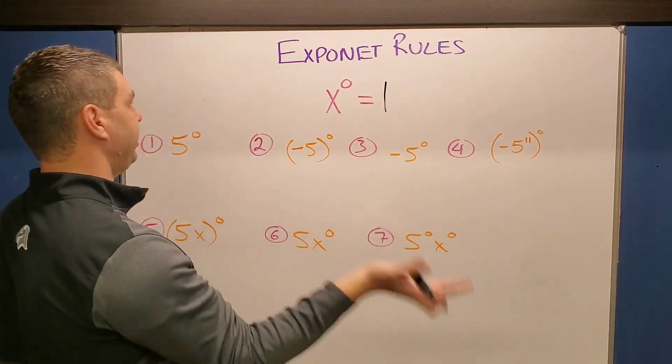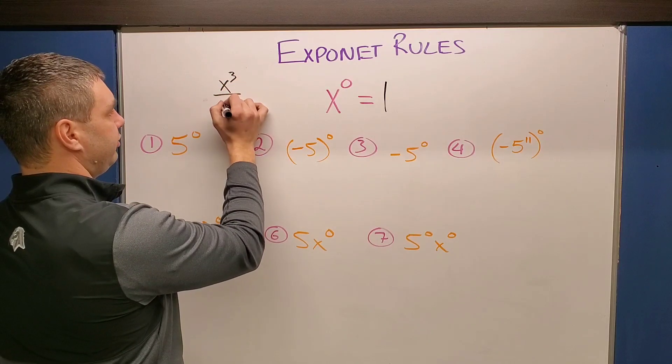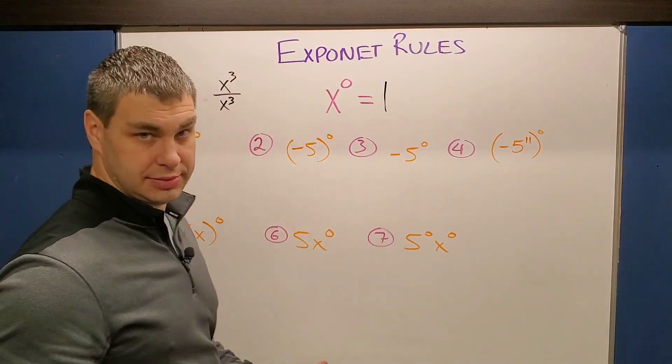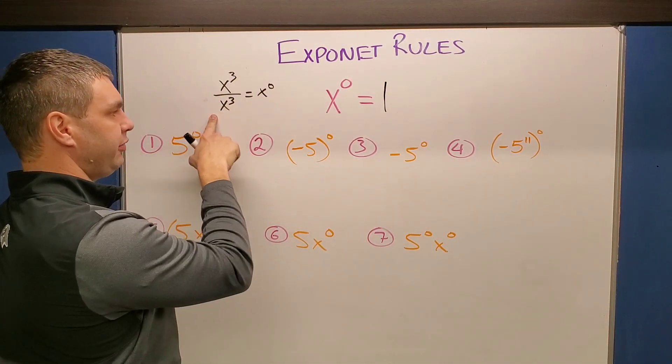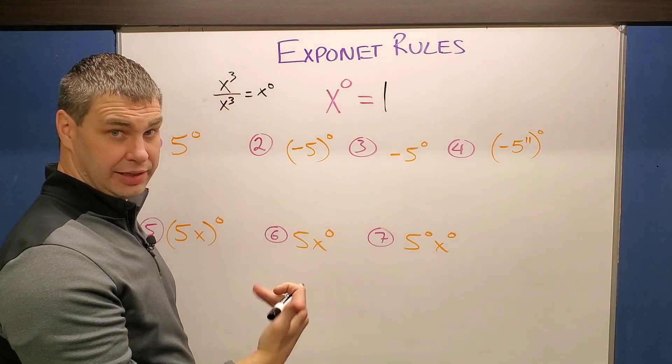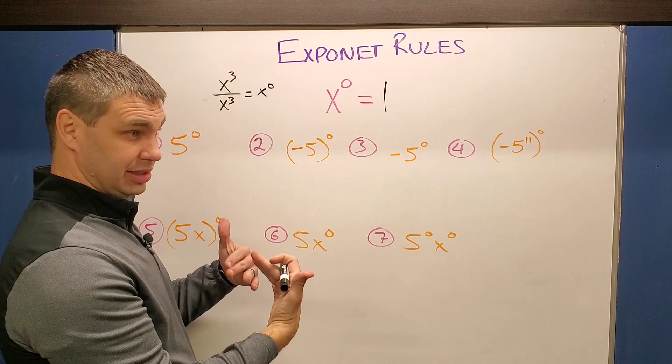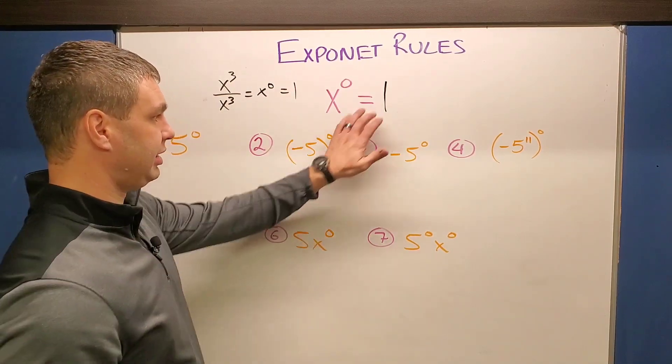The reason why that works, if you think about our subtraction rule, if I have like x to the third over x to the third, well, three minus three is zero. And so this would equal x to the zero. And we know anything over itself, like five over five or four over four, a number over itself is equal to one. So that's kind of why this works.